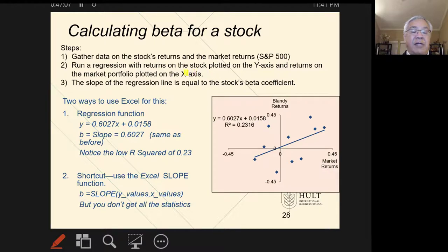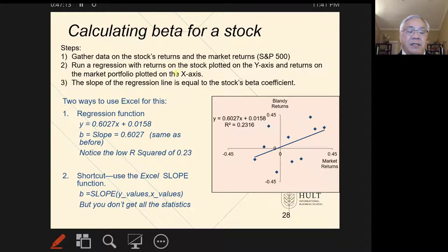So, calculation of beta. There's another way to calculate beta, which is how we do it in practice. We take all the stock data and measure the rate of return for a stock, and we also get it for the market. For the market, we use the Standard & Poor's 500, the S&P 500.